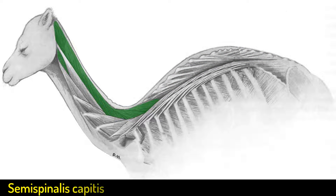This highlighted muscle is the semispinalis capitis muscle, which is normally divided into biventer and complexus muscles, but they are fused in the camel.